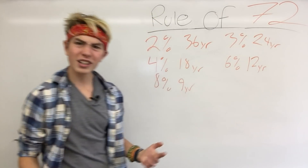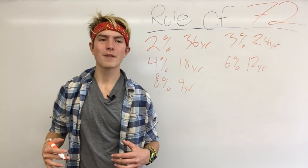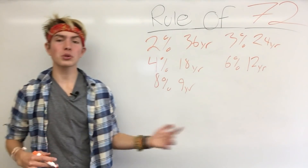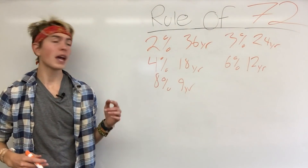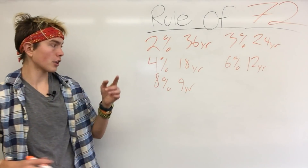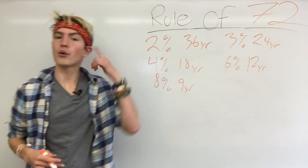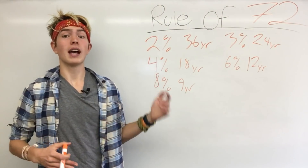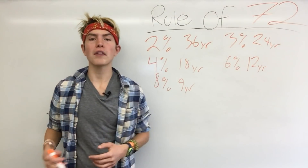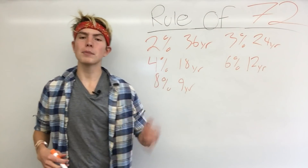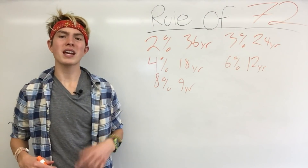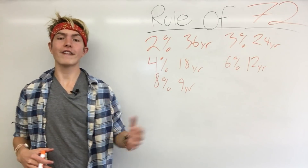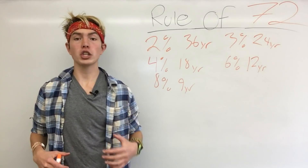See a pattern here? That pattern is the rule of 72 right in action. That's what we're going to be talking about today — how you can make these calculations in your head right away, without any thinking. Just knowing these off the top of your head is going to make you look really smart and help you get to doubling your money faster and more efficiently.